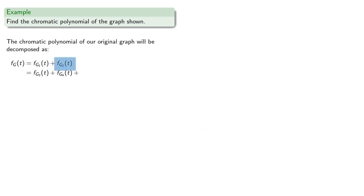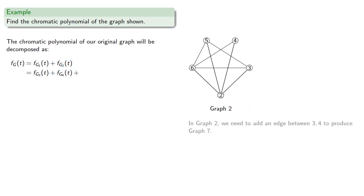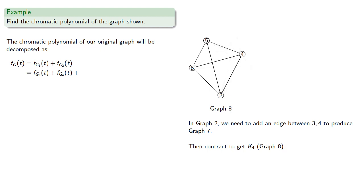Meanwhile, in graph 2, we can add an edge between the non-adjacent vertices 3 and 4 to produce graph 7. Then we can contract to get K4, which we'll call graph 8. So the chromatic polynomial of graph 2 is the chromatic polynomial of graph 7 plus the chromatic polynomial of graph 8.